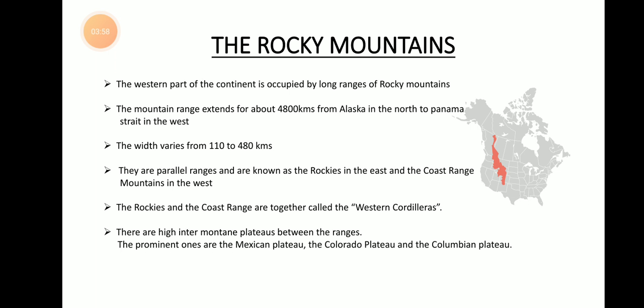In the map you can see a linear, narrow portion which may be around 110 kilometers wide, while the fat, bulky shade in the middle could be nearly 480 kilometers. Such a long and wide mountain system in North America is named the Rocky Mountain Ranges.